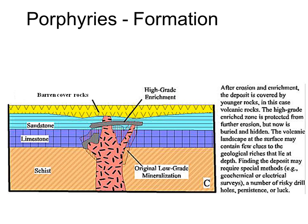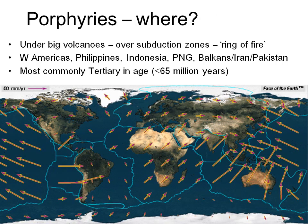Following erosion, many porphyries are covered by sediments or younger volcanics. We know that porphyries form under large subduction-related volcanoes, most located under the ring of fire around the subducting Pacific plate. Another fertile subduction zone occurs in the Balkans, Turkey, Iran, and Pakistan. Because of extensive subduction during the Tertiary — the last 65 million years — many porphyry deposits are of this age and relatively young by geological standards. If Earth's history were compressed into one year, the Tertiary would occupy just the last five days of December.